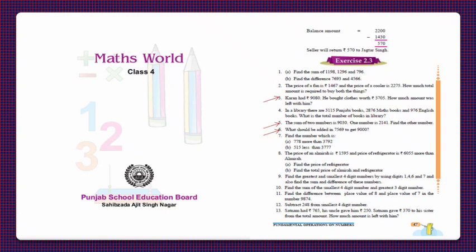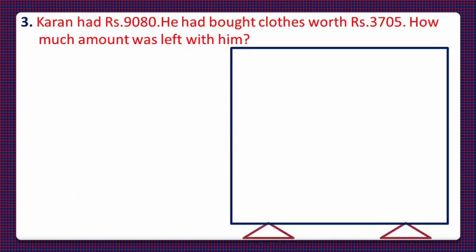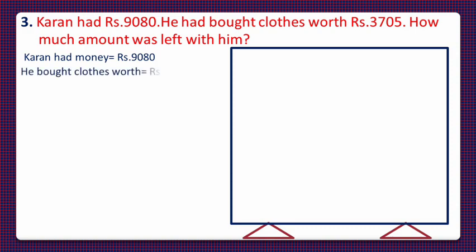Hello students, today let us do exercise 2.3 of class 4 Maths World. We will do question number 3, 5, and 6. Question number 3 is: Karan had rupees 9080, he bought clothes worth rupees 3705. How much amount was left with him? So Karan had money that is rupees 9080, he bought clothes worth rupees 3705.